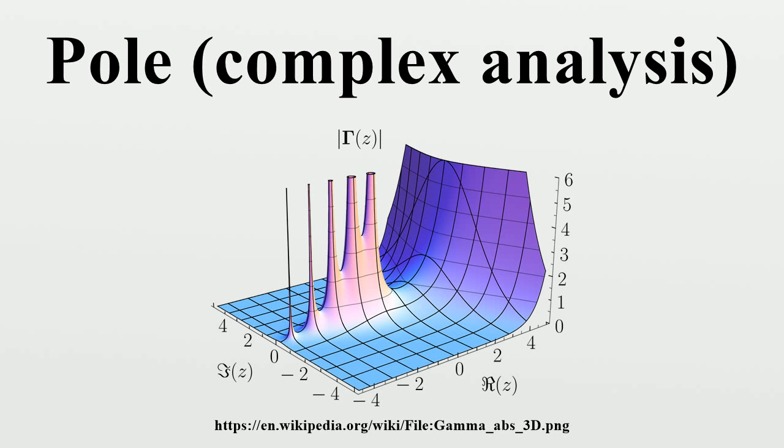The pole at infinity is the simplest non-trivial example of this definition in which M is taken to be the Riemann sphere and the chart is taken to be z → 1/z. Examples: